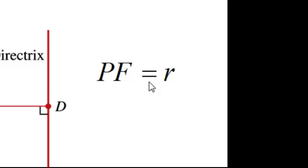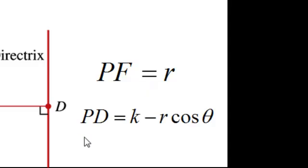PF is our radius. PD is the K minus R cosine theta, the Y value minus the X value. And our equation from before, PF equals the eccentricity times PD.